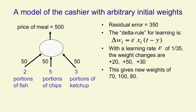That'll give us new weights of 70, 100, and 80. Notice the weight for chips actually got worse. There's no guarantee with this kind of learning that the individual weights will keep getting better. What's getting better is the difference between what the cashier says and our estimate.